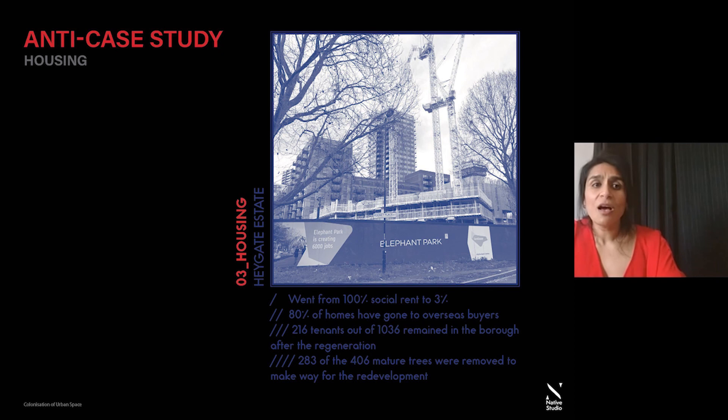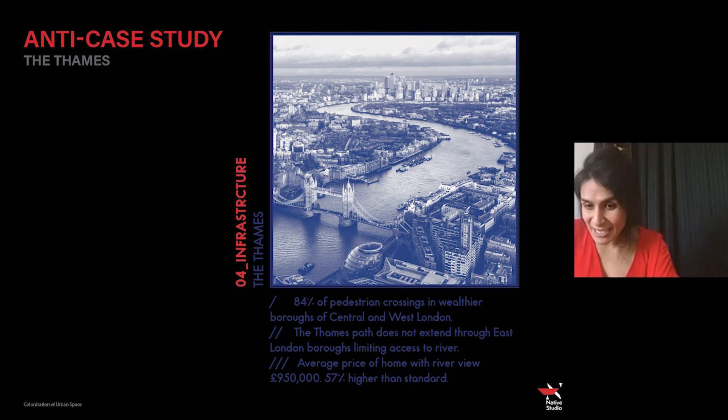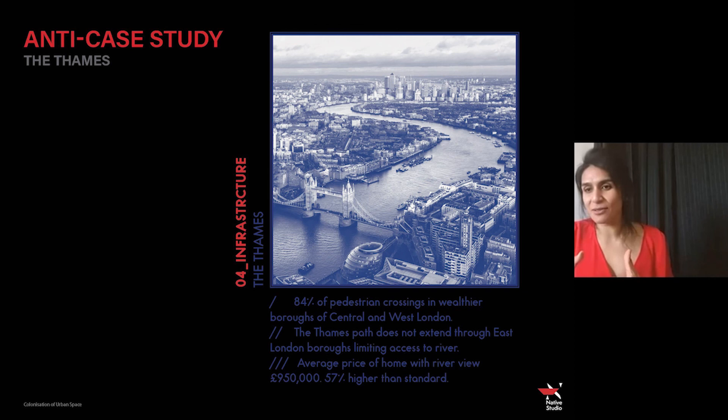Another example on the River Thames: 84% of the pedestrian crossings sit in wealthier boroughs of Central and West London. The Thames path doesn't extend to East London boroughs, limiting access to the river. The average price of a home with a river view is 57% higher than a standard home. These are examples of how one of the main amenities and beautiful parts of London remains inaccessible to people from poorer boroughs.